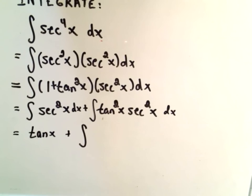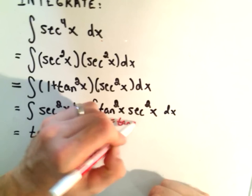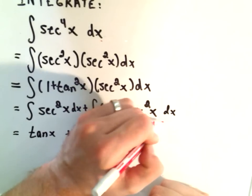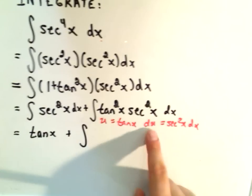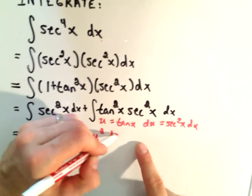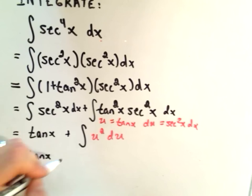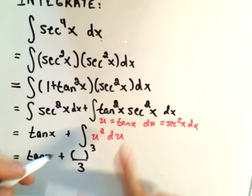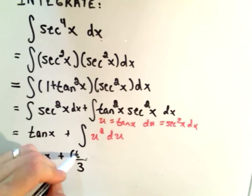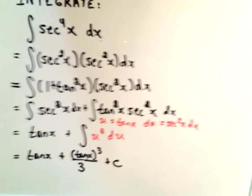So we know an anti-derivative of secant squared is just tangent of x. Well, for the next part, you're just doing a u substitution. You're letting u equal tangent of x. du would be secant squared of x dx. So if you plug that in, you're just integrating u squared du. And this will simply give you tangent of x. If you integrate, you'll get u to the third over 3. But we know what u is. It's tangent of x. So we can go ahead and plug that back in, all to the third, plus c.